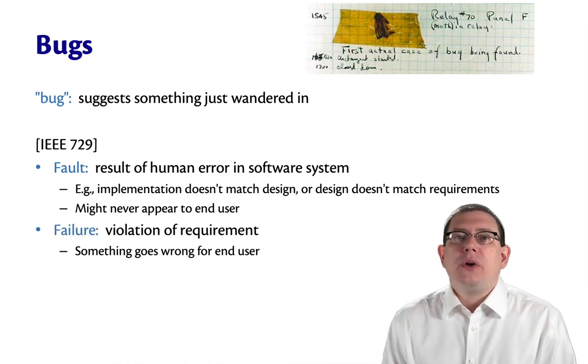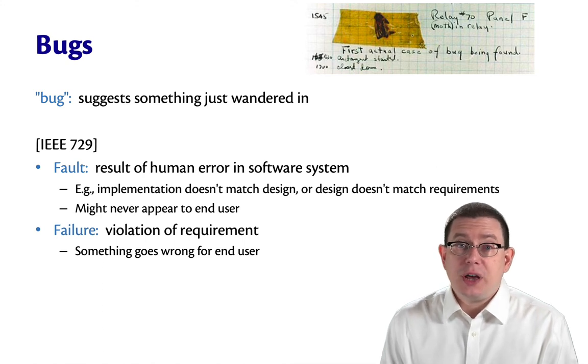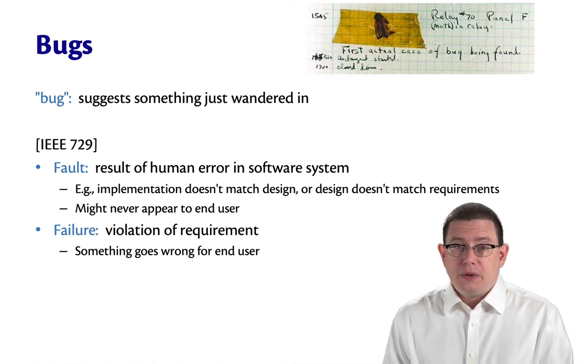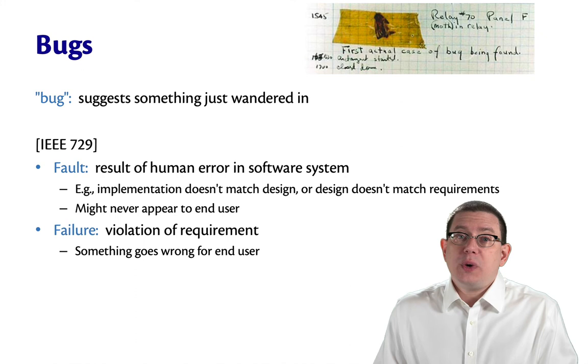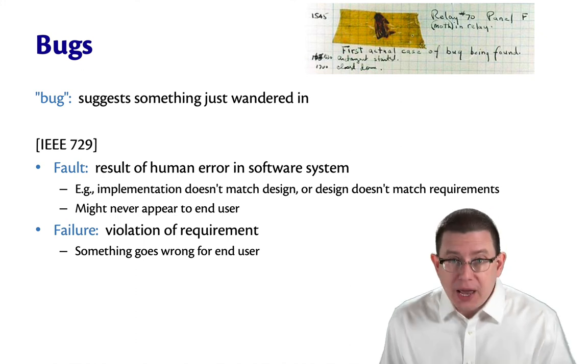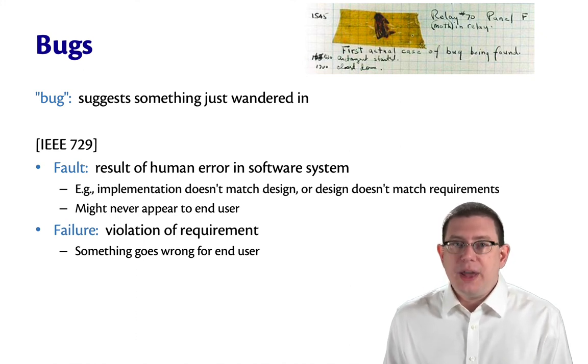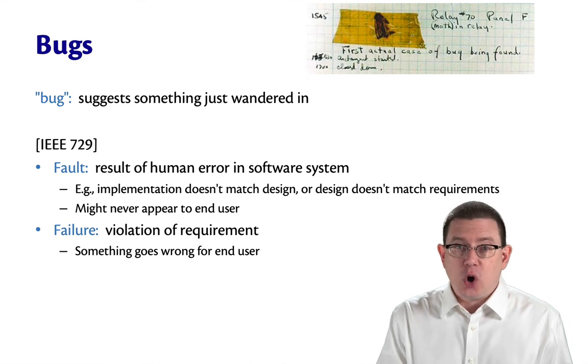A failure is a violation of a requirement, which is to say a requirement that an end user has for how the system should behave. So when a failure occurs, this becomes visible to the end user. They notice that something has gone wrong.